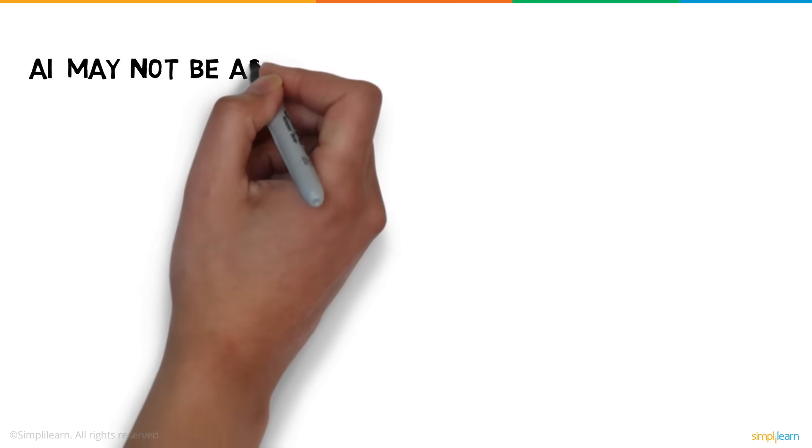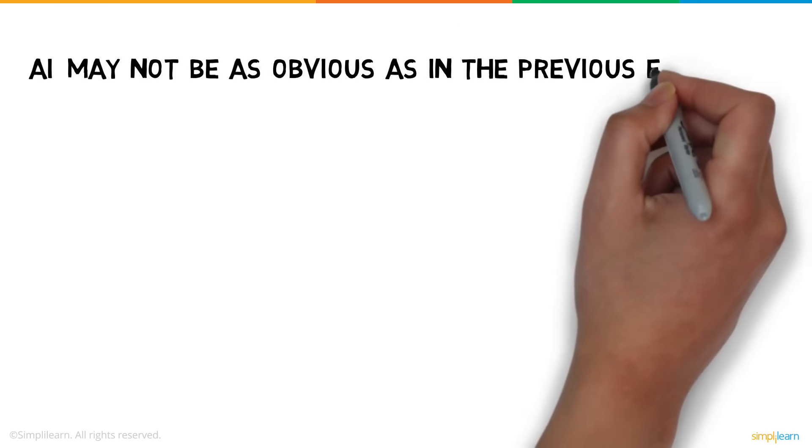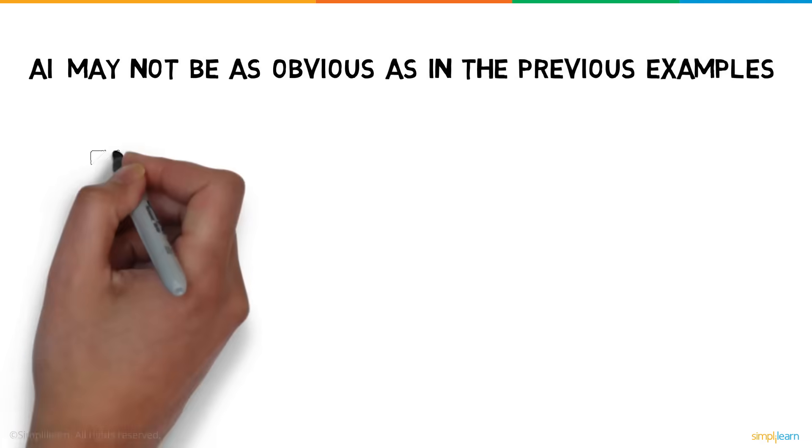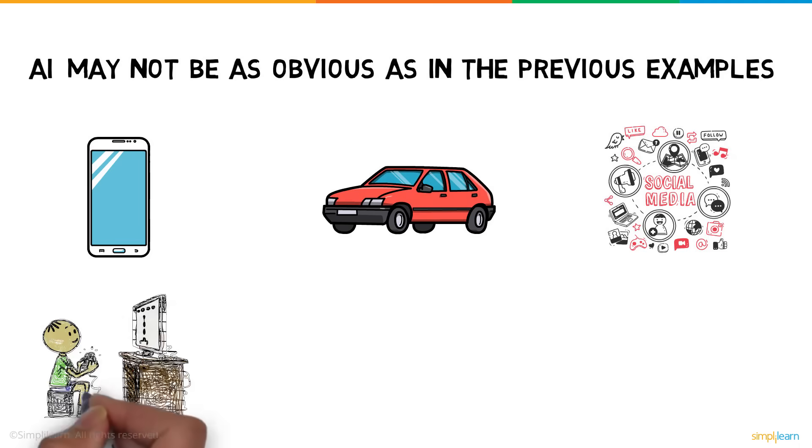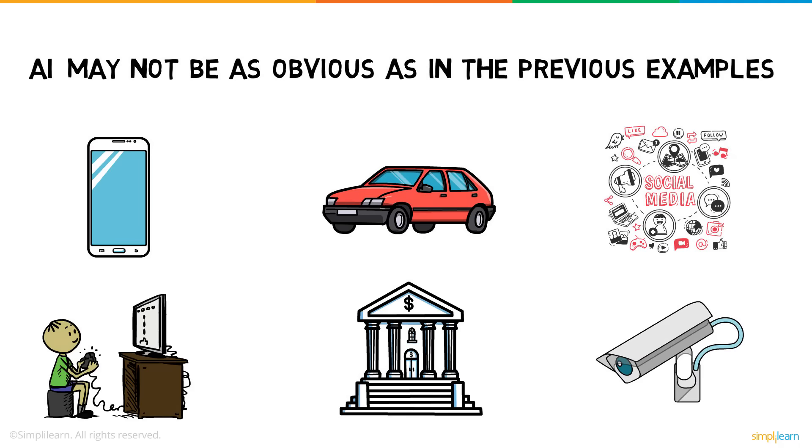But AI may not be as obvious as in the previous examples. In fact, AI is used in smartphones, cars, social media feeds, video games, banking, surveillance, and many other aspects of our daily life.